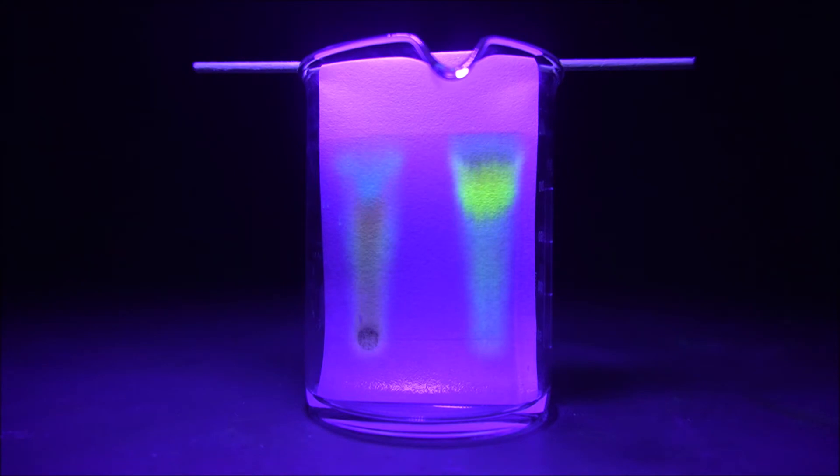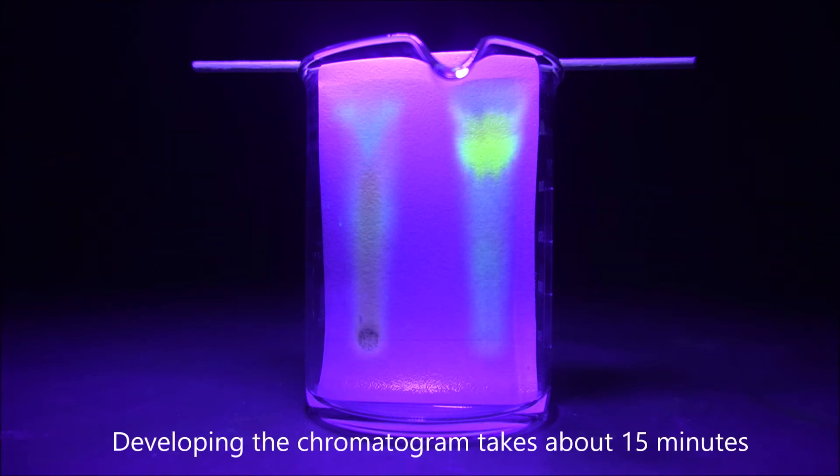The developed chromatograms show that the carbon quantum dots from citric acid and formamide on the left have blue, red, green and purple color. The black spot on the start is from carbonized reaction by-products. The carbon quantum dots from citric acid and urea on the right are mainly yellow with a smaller fraction of blue.